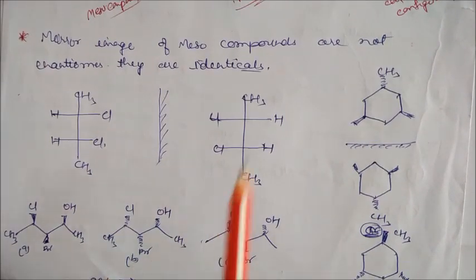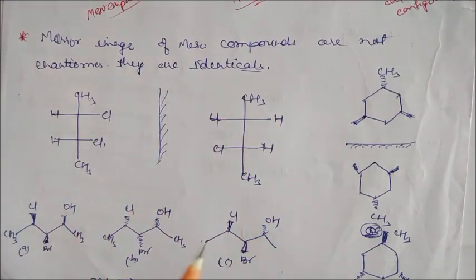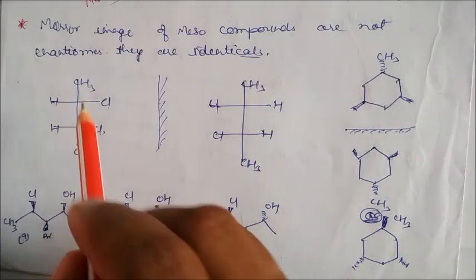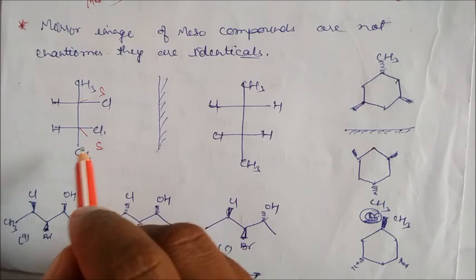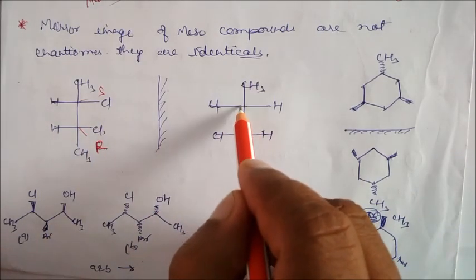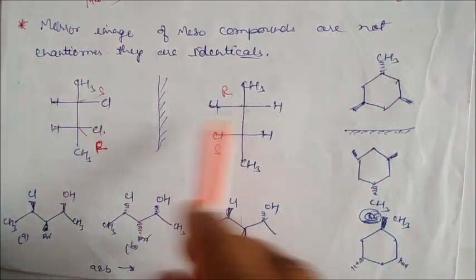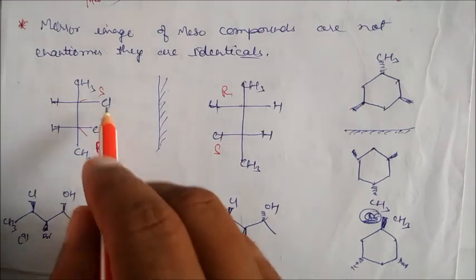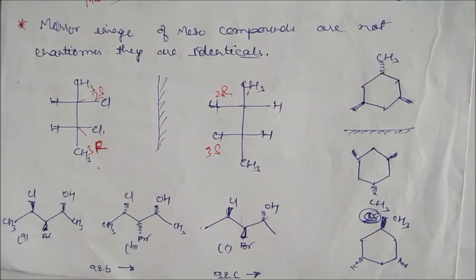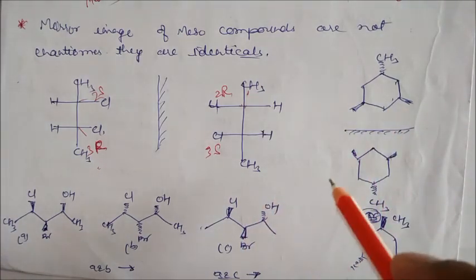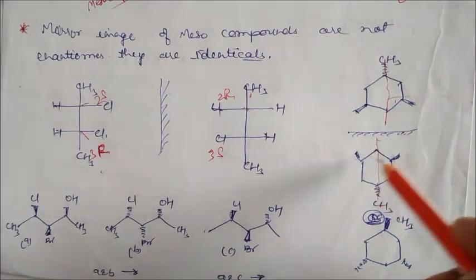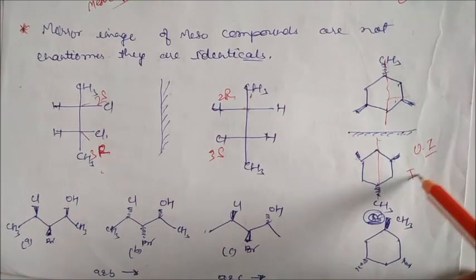Now next: if the mirrored image of the meso compounds are not enantiomers, so they are identical. We can verify from here. So this is the mirrored image of these compounds — this is very clear. Already we discussed: this compound is your S. If you see from here, this compound is not S — this is your R. So if you calculate: this becomes your R, and this becomes your S. So it is an enantiomer — you can see very clearly: this is your 2S and 3R, and this will be your 2R and 3S. So this compound is also identical — why? Because if you draw the plane here, you can see both halves are equal to each other. So the mirrored image is equal to itself — this is again optically inactive compounds, or we can say this is the identical.